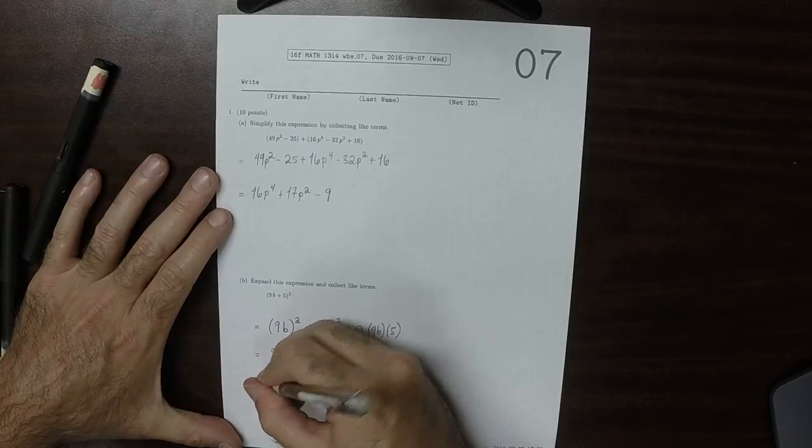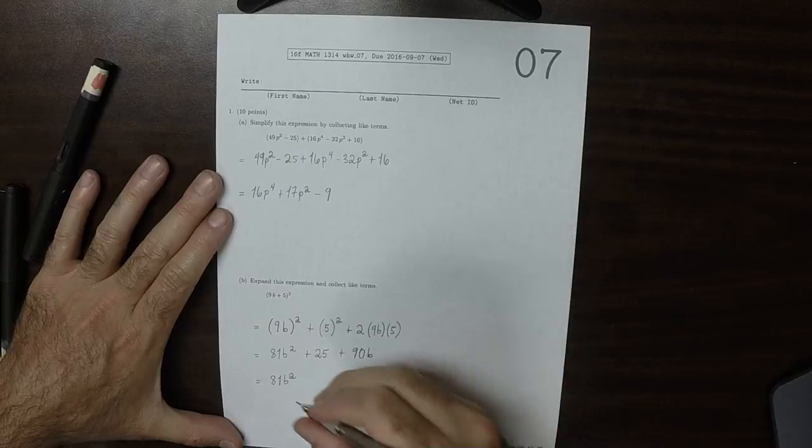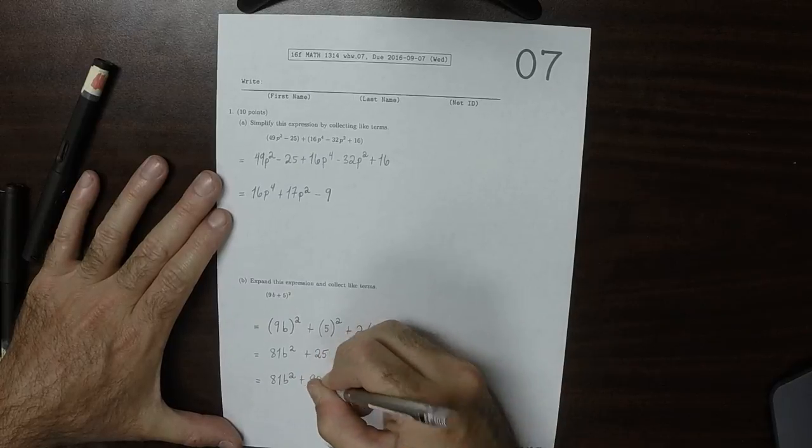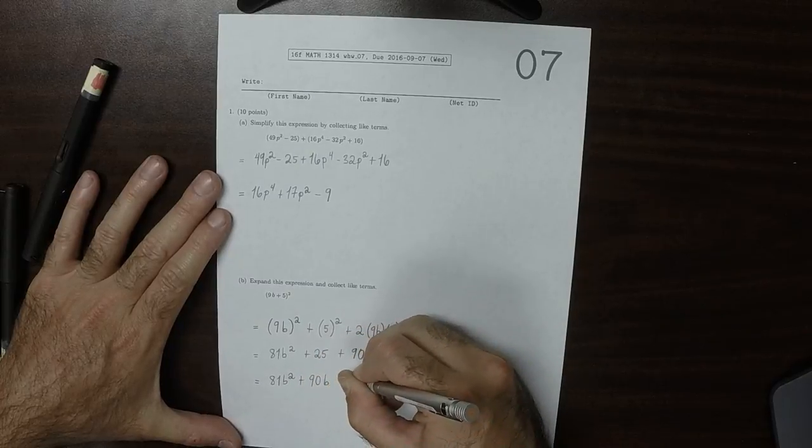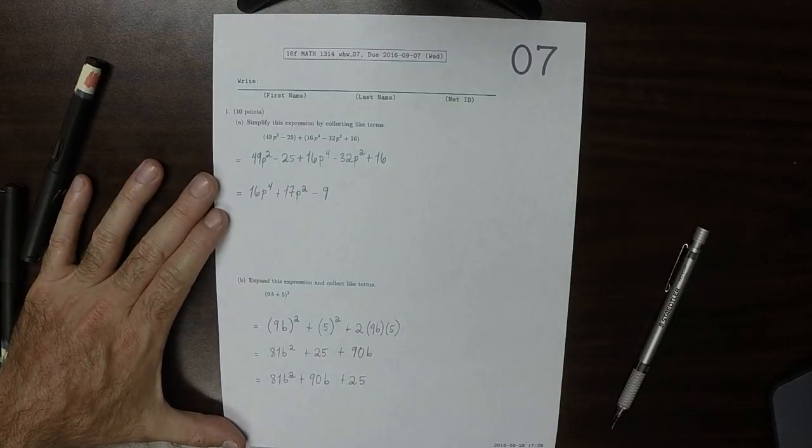And then writing this in descending order of degree, that would be 81b squared plus 90b plus 25. And that's the answer to the exercise.